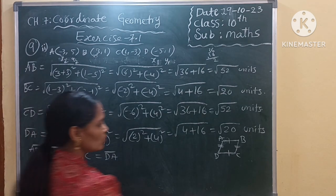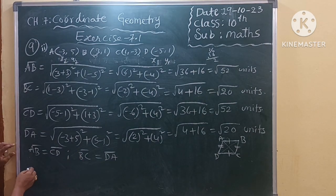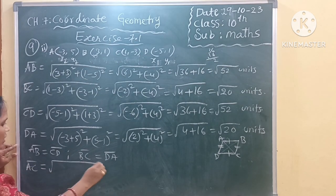So opposite sides are equal we got it. Now what about diagonals? Once we can find the distance of diagonals. That is AC first.